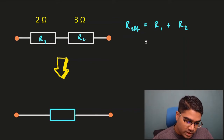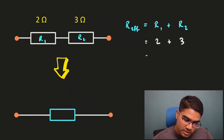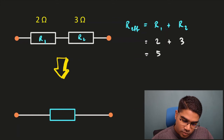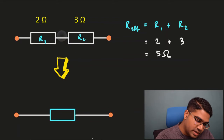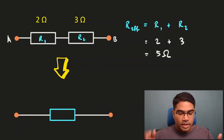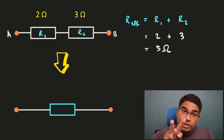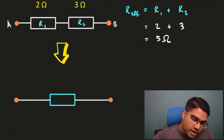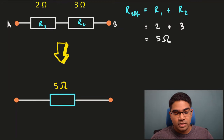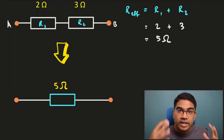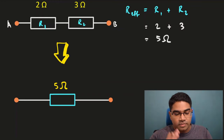For this circuit, all we have to do is add 2 ohms and 3 ohms. Ohms is the unit for resistance. So altogether we get 5 ohms. The effective resistance across AB is 5 ohms. We can see these two resistors as a single resistor with a value of 5 ohms. This greatly simplifies all our calculations.